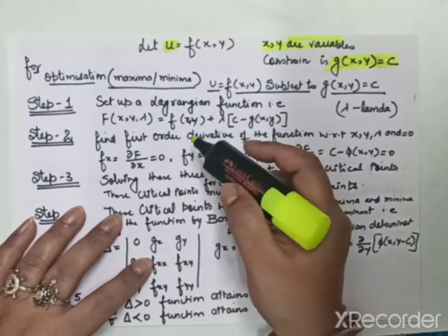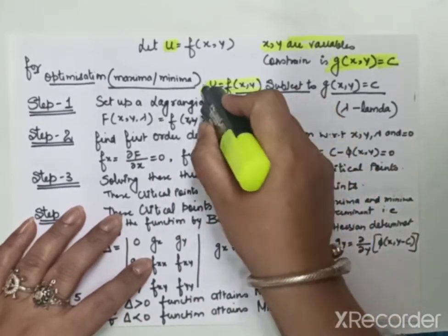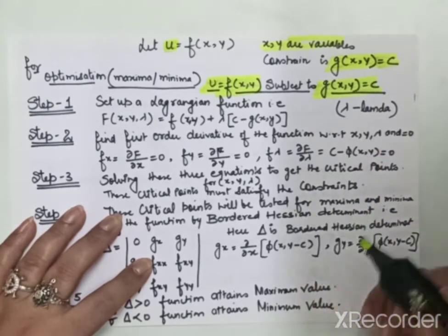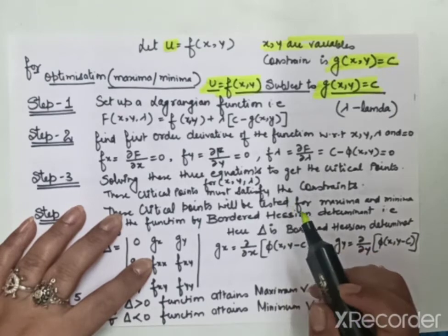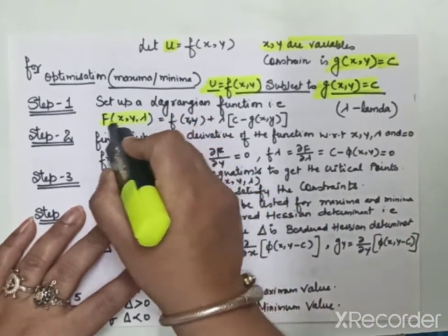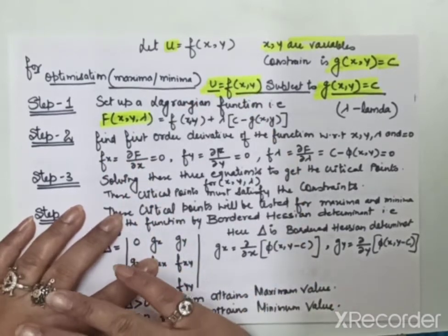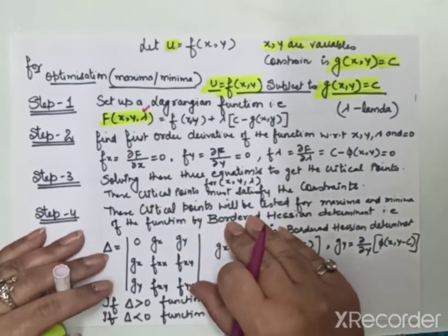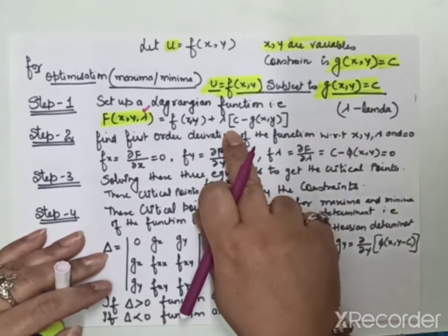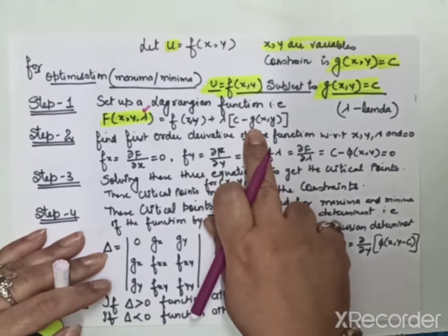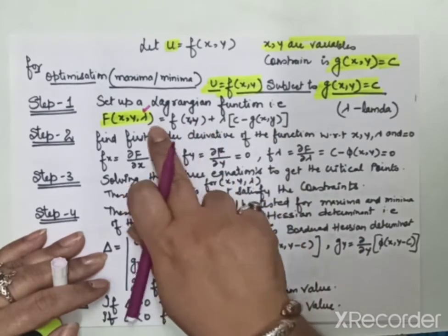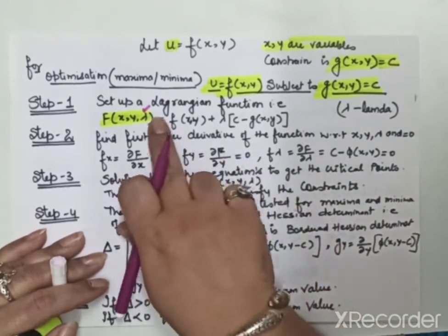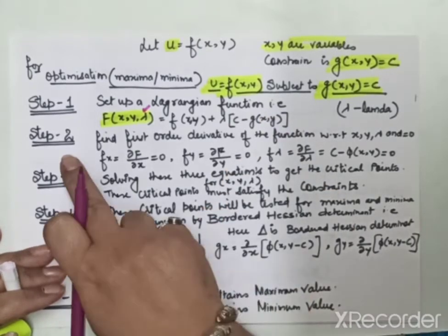Step 1: Set up a Lagrangian function. If we have function u given, where x and y are variables subject to constraint g(x,y) = c, we introduce a new variable lambda. The Lagrangian function contains our original function plus lambda multiplied by our constraint, meaning c minus g(x,y). So this is the first step - setting up the Lagrangian function.